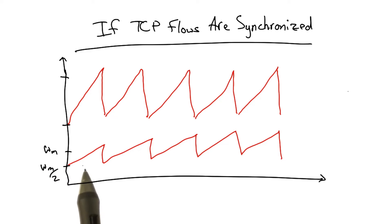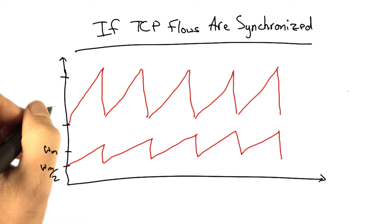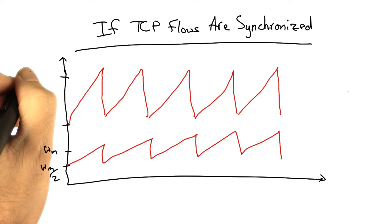Now, if TCP flows are synchronized, the dynamics of the aggregate window, as shown in the upper part of the graph, would have the same dynamics as any individual flow. The quantities on the y-axis here would simply be different.